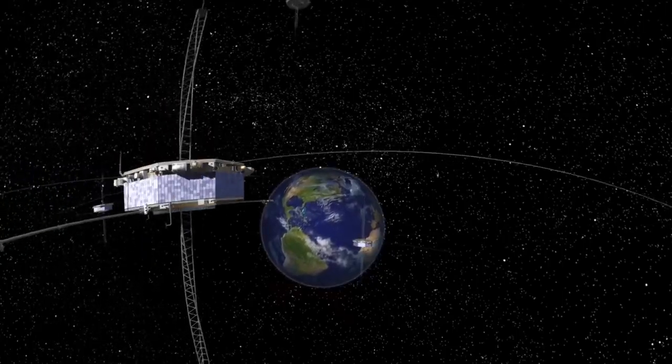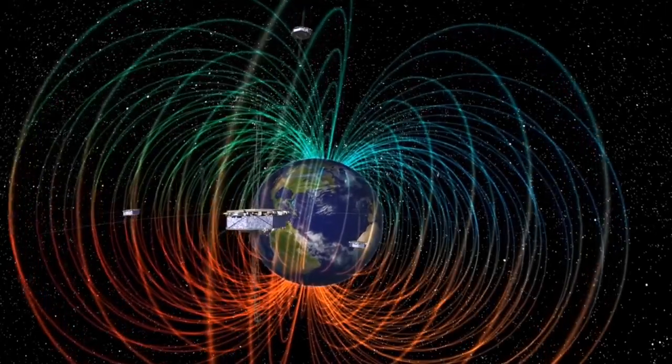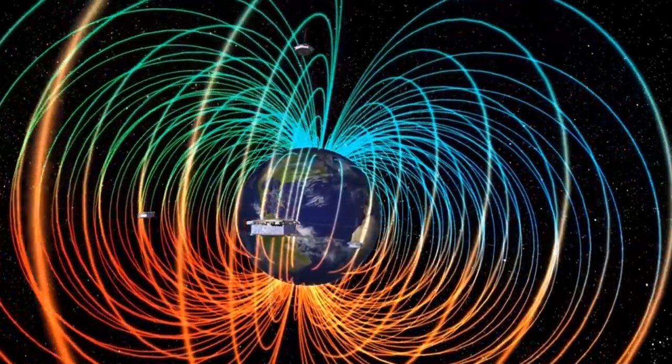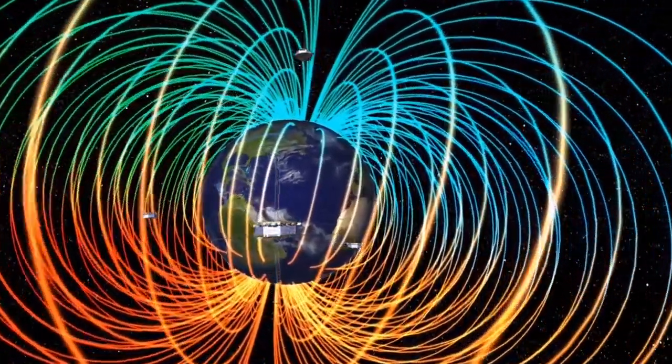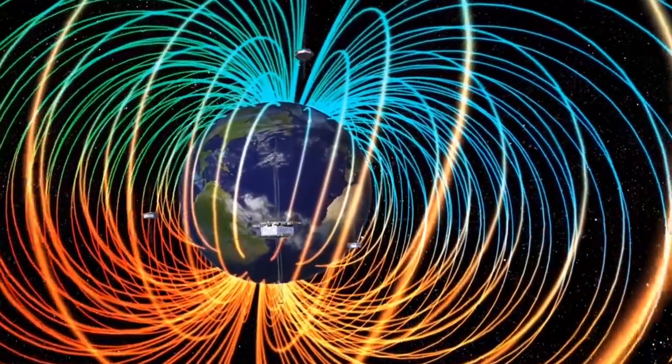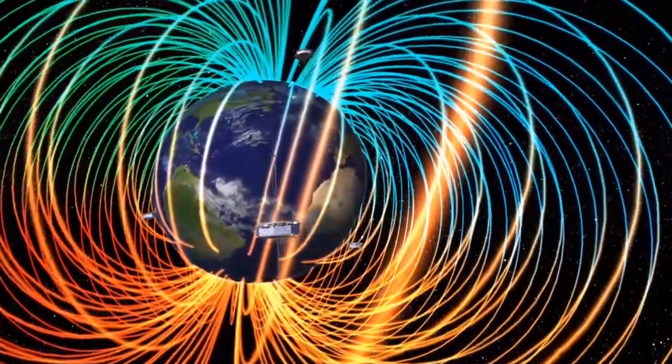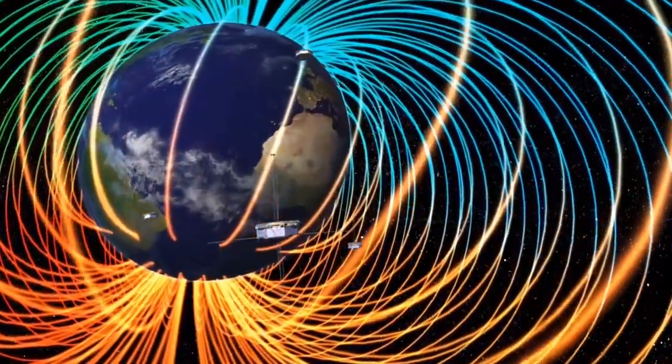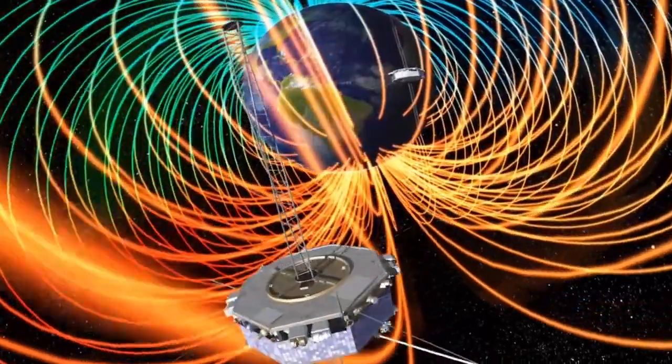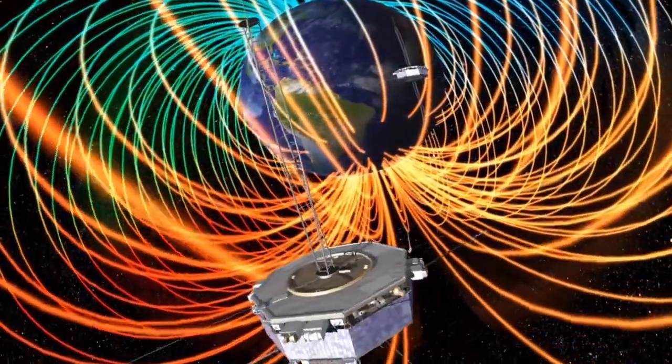The MMS spacecraft traveled directly through magnetic reconnection sites. Reconnection occurs when magnetic field lines annihilate each other and release a gigantic burst of energy. This fundamental process taps energy stored in the magnetic field and converts it into fast-moving charged particles.